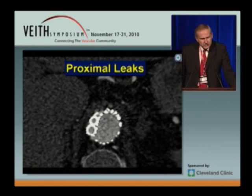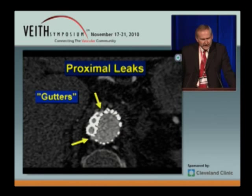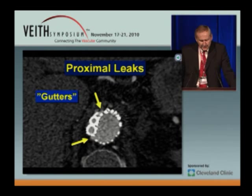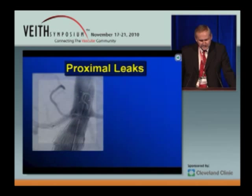The major objection to chimney grafts has been the presence of proximal endoleaks that have been blamed on the so-called gutters — those little channels running alongside the chimney grafts on either side. The gutters are in fact very small, and I think that in most cases the reason for the proximal endoleaks has been that people have placed two short chimneys.